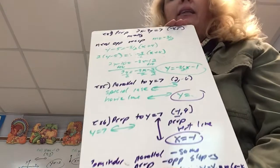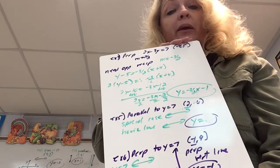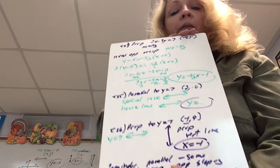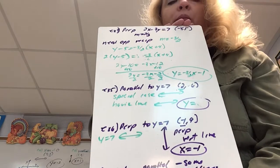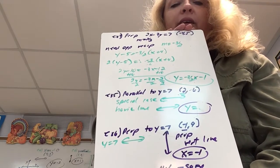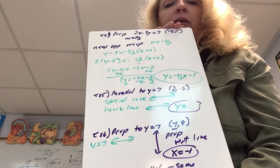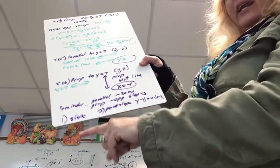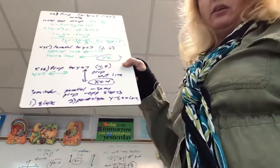As a reminder: parallel lines have the same slope, so to write equations of parallel lines, use the same slope. Perpendicular lines have slopes that are opposite reciprocals — perpendicular lines intersect to make a right angle. So when writing an equation of a perpendicular line, use the opposite reciprocal slope. Once you figure that out, you need slope and point-slope form.